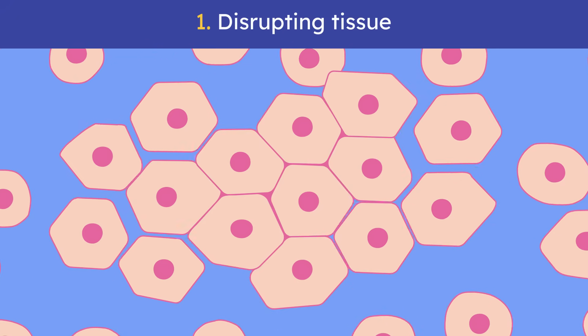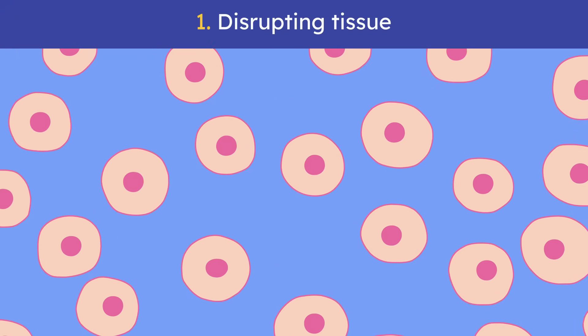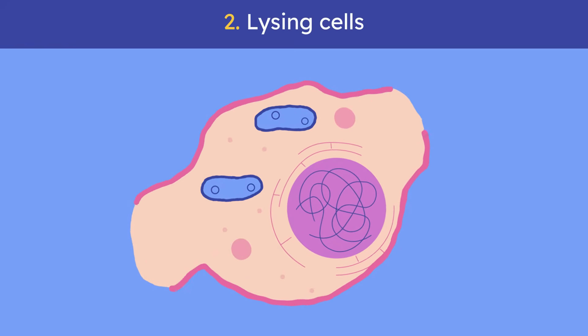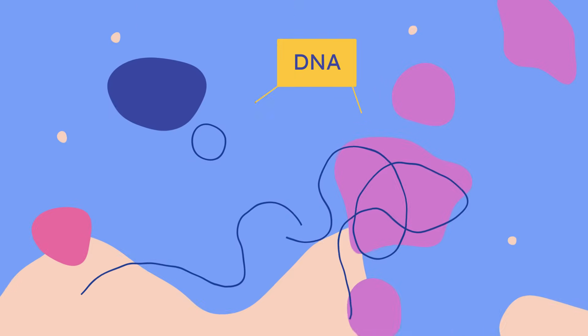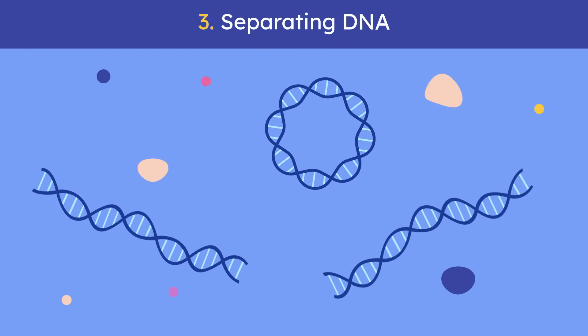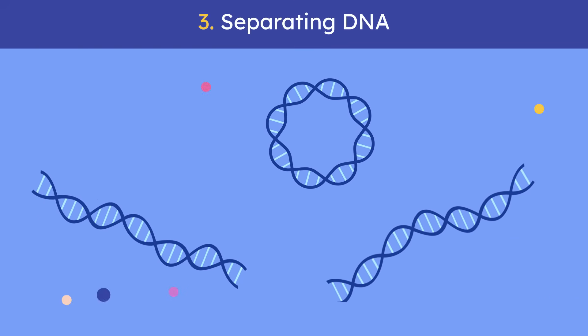The first step is disrupting the tissue to break the cells apart. The second step is lysing or bursting the cells open to release the DNA. And the third step is separating the DNA from the other unwanted parts of the cell.